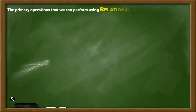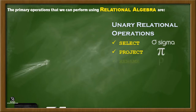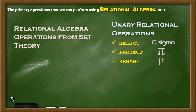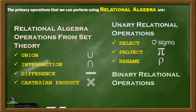The primary operations that we can perform using Relational Algebra are: 1. Unary Relational Operations — under that we have Select, Project, and Rename. 2. Relational Algebra Operations from Set Theory — under that we have Union, Intersection, Difference, and Cartesian Product. 3. Binary Relational Operations — under that we have Join and Division.